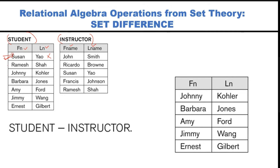Pick the second entry 'Ramesh' and search for Ramesh in the instructor table. Ramesh is there, so you cannot include Ramesh in the resultant table. Then pick 'Johnny' — search in instructor: John, Ricardo, Susan, Francis, Ramesh. Johnny is not in the instructor relation, so you keep Johnny in the result.